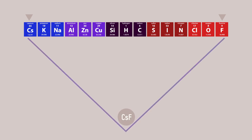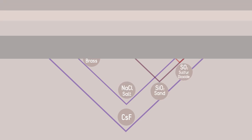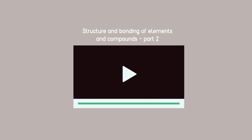We now have a triangular space where all other combinations of elements can be situated. Elements are along the top, and the space will be filled with compounds like brass, sulfur dioxide, sand, and salt. By considering the reaction between pairs of elements like this, we will show in part two of this video that there are only four types of bonding possible.